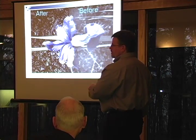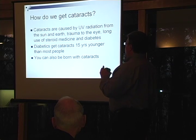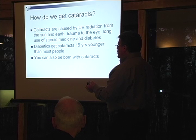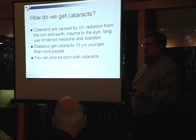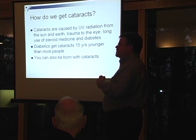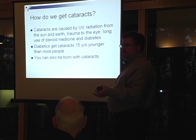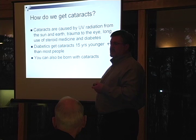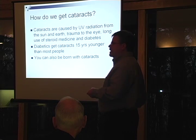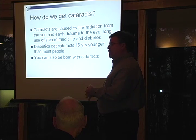How do we get cataracts? Cataracts are caused by UV radiation. Trauma to the eye can cause a cataract. Long-term use of high-dose steroid medicines causes cataracts. Diabetes is also a factor — diabetics can get cataracts around 10 to 15 years younger than most people, because high blood sugar levels cause the lens to harden and get denser faster than a normal lens.